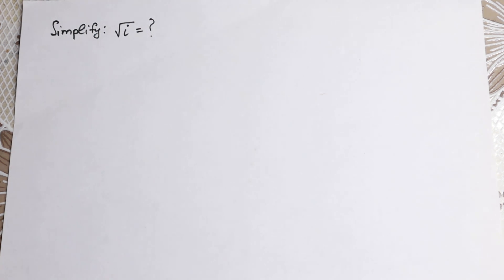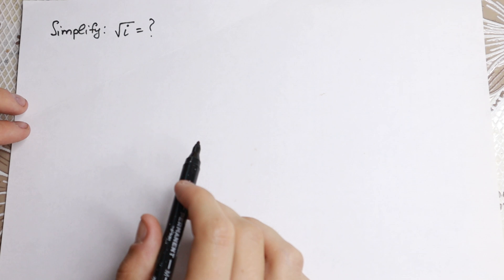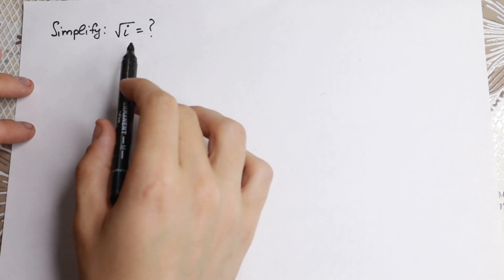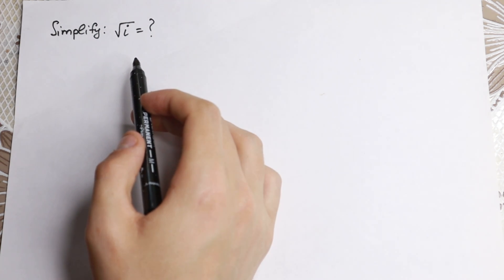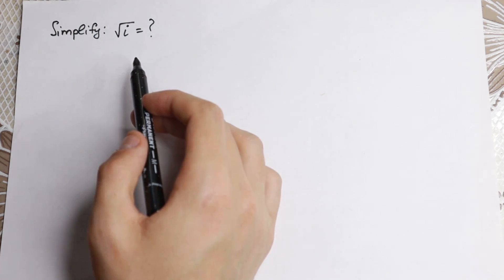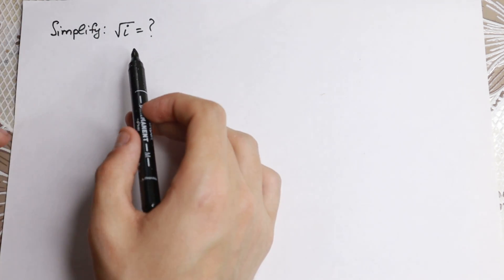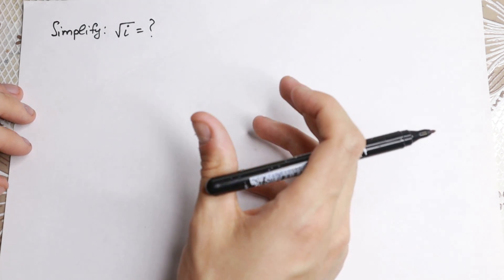Hello everyone! Welcome back to higher mathematics — happy to see you here. We have a really interesting algebra problem today: we need to simplify the square root of i. Of course, we are talking about the complex number i — not a different i. This is about complex numbers. So let's start.